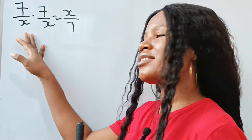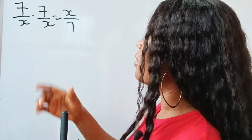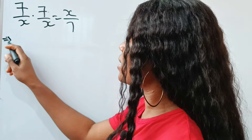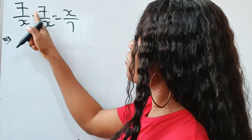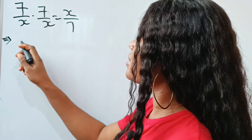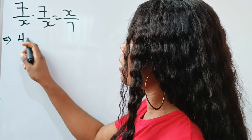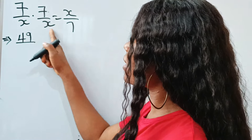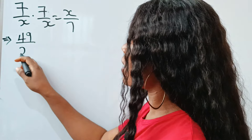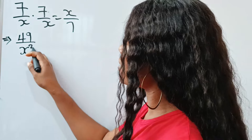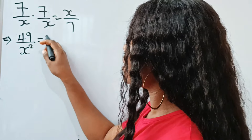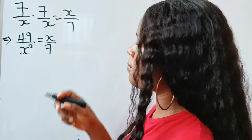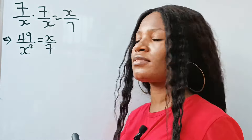So this is the question. Let's simplify this: 7 multiplied by 7 gives us 49, and x multiplied by x gives us x squared, which is equal to x divided by 7.